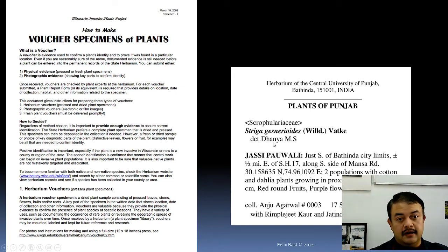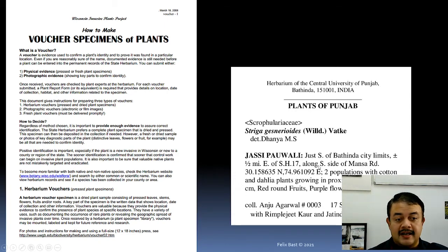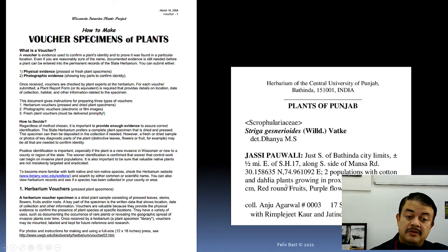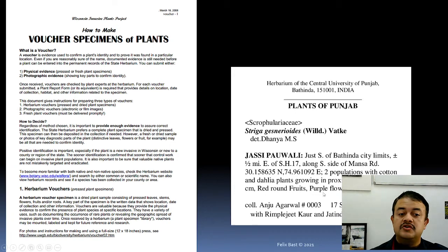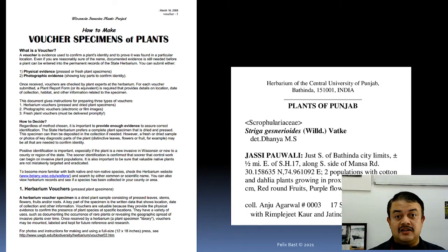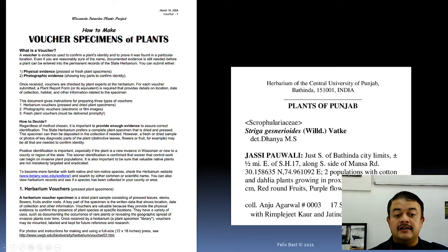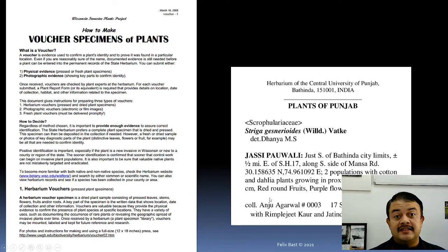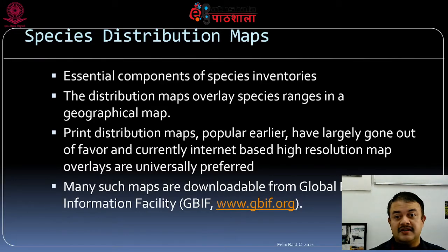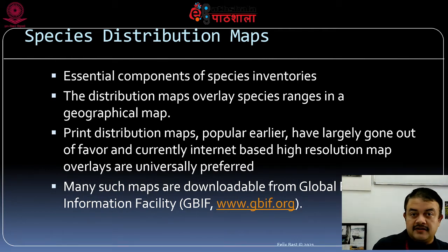Detailed instructions on making a voucher specimen are available on the course website. The standard format followed at the Central University of Punjab Herbarium (CUPB) includes the binomial name (determinavit), exact location with latitude and longitude, habitat description, ecology, proximity of other species, plant height, fruit and flower details, collector name, collection date, and companions on the collection trip. The GenBank sequence identifier can also be written on the voucher.